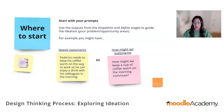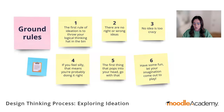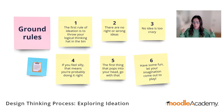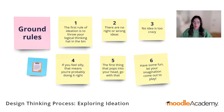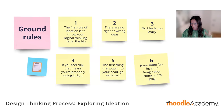Now we're going to cover a couple of ground rules. A lot of people go into ideation with their logical hat still on — the first rule is that we need to throw that out the window. This is the time to think really broadly and a bit crazy. Rule number two: there's no right or wrong ideas. We're really trying to solicit anything from anyone involved in the ideation. Rule number three: no idea is too crazy, because some of the most innovative solutions are born out of the craziest ideas.